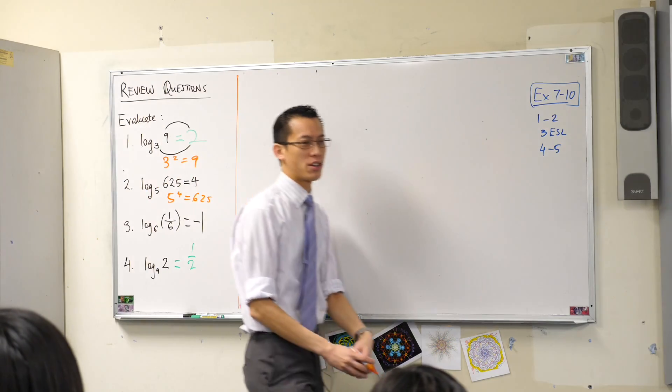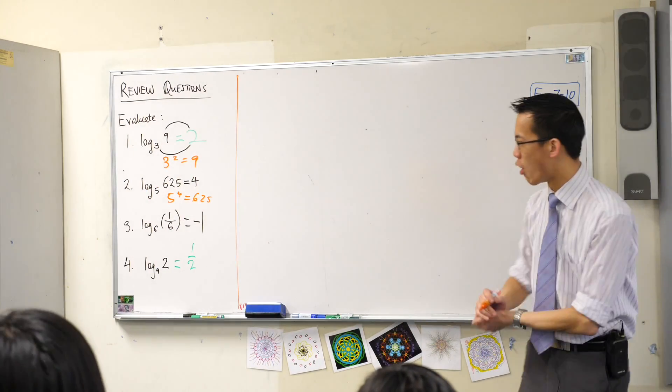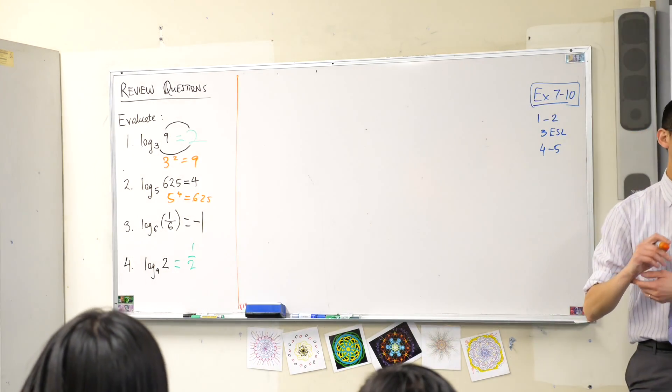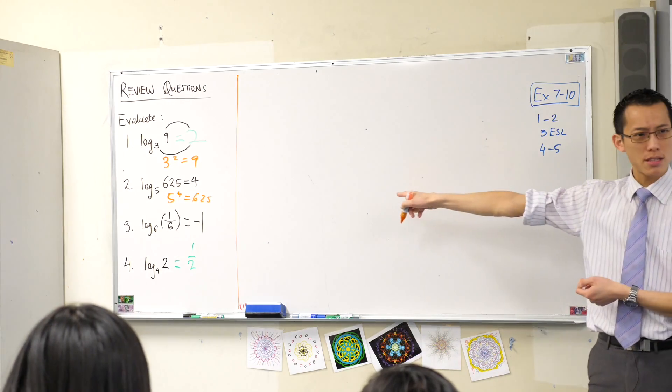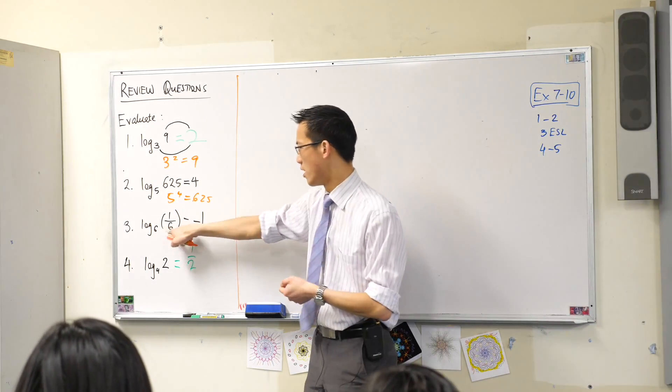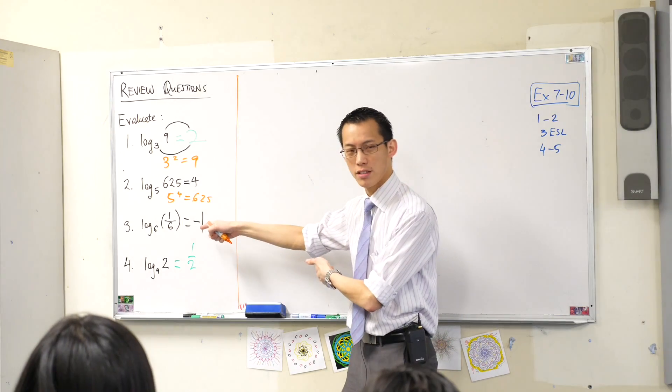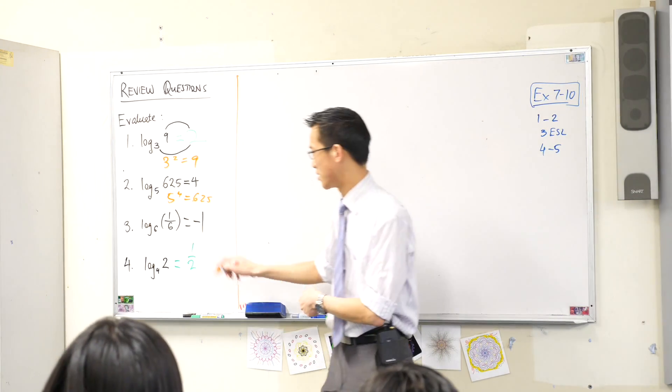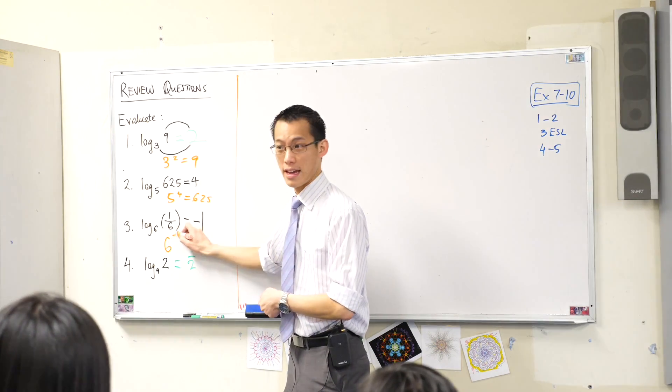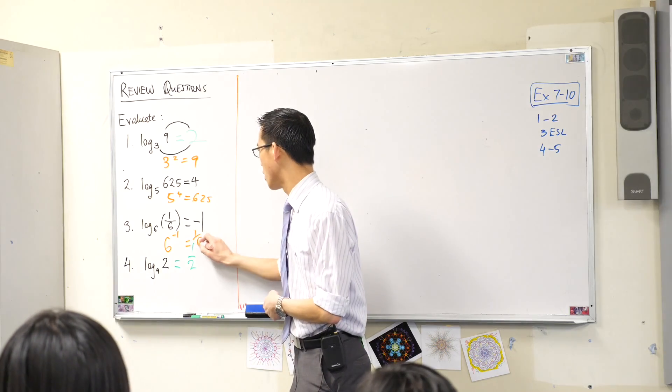These last two are a bit sneakier because they're not just regular old whole number powers, whole positive number powers. What's this second last one? How do you get a fraction? What power is that? Negative powers will give you fractions. So 6 to the negative 1, that's 1 over 6.